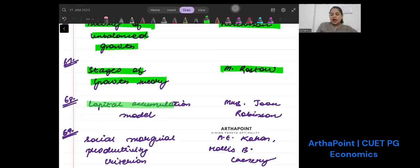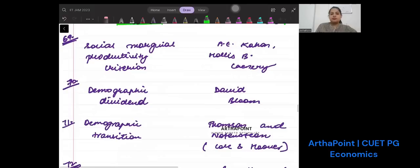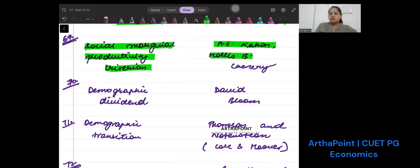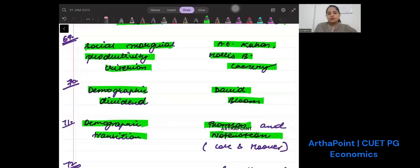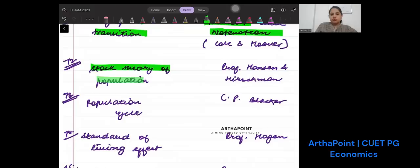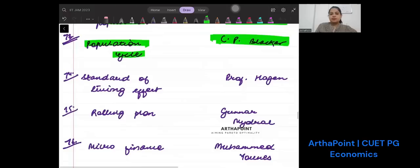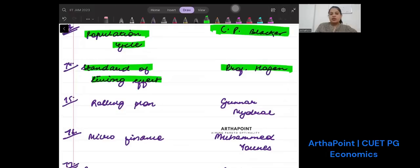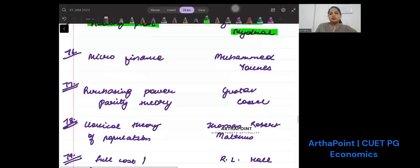Stages of growth theory is W.W. Rostow. Capital accumulation model is given by Mrs. Joan Robinson. Social marginal productivity criteria is given by A.K. Sen and Hollis B. Chenery. Demographic dividend is given by David Bloom. Demographic transition is given by Thompson and Notestein, and later by Coale and Hoover. Stock theory of population is given by Hansen and Hirschman. Population cycle is given by C.P. Blacker. Standard of living effect is given by Professor Hagen. Rolling plan is given by Gunnar Myrdal.